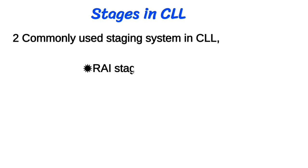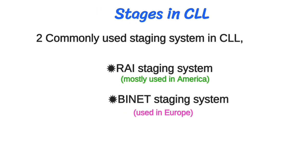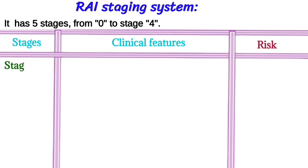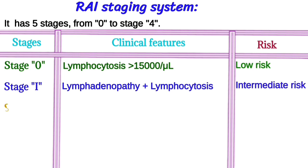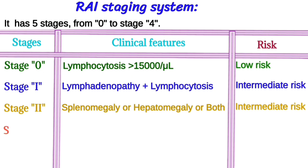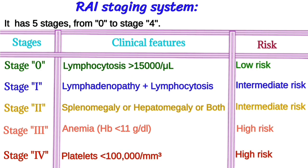Two commonly used staging systems in CLL are the Rai staging system, mostly used in America, and the Binet staging system, used in Europe. The Rai staging system has five stages from zero to four. Stage 0: lymphocytosis greater than 15,000, low risk. Stage 1: lymphadenopathy plus lymphocytosis, intermediate risk. Stage 2: lymphocytosis plus splenomegaly or hepatomegaly or both, intermediate risk. Stage 3: lymphocytosis plus anemia (Hb less than 11), high risk. Stage 4: lymphocytosis plus decreased platelets, high risk.